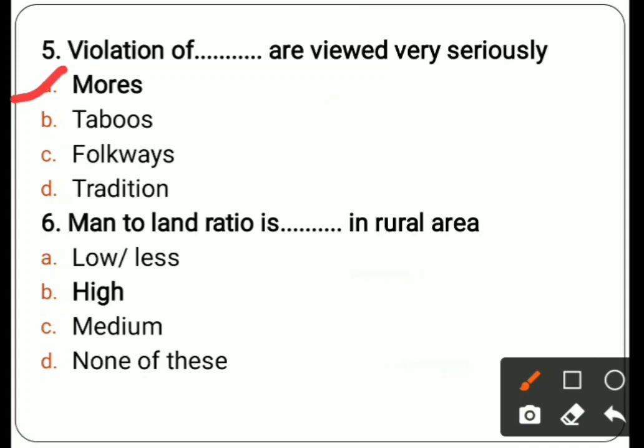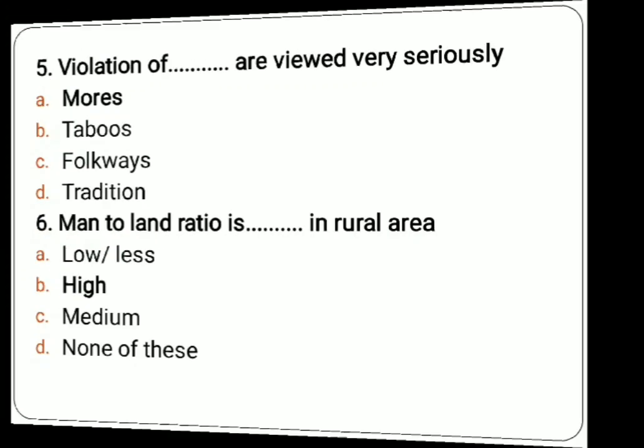Sixth question: man to land ratio in rural area. This is based on how much of the population is dependent on agriculture. In rural areas, more of the population depends on agriculture, so the man to land ratio is high. Options are low, high, medium, none of these. Correct answer is high.